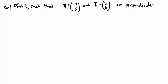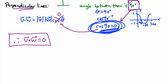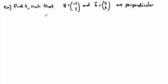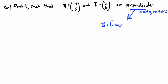Here's an example: find t such that a equals (-1, 5) and b equals (2, t), given that they're perpendicular. The fact that they're perpendicular tells us the angle between them is 90 and cosine of 90 is zero, so v dot w equals zero. In this case that means a dot b equals zero — that's the logical step, because theta equals 90 and cosine of 90 equals zero.